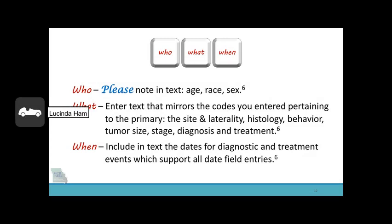Who, what, and when. We understand that typos happen. In the sex field, you may see a 1 for male when the text states that the patient is female. If this case goes directly into the database, we may not find the coding error for quite some time, if ever. Think of text entries as labels confirming the codes entered into the data fields. When it comes to dates, include in text the dates for all diagnostic and treatment events — this allows the reviewer to determine the chronology of events.